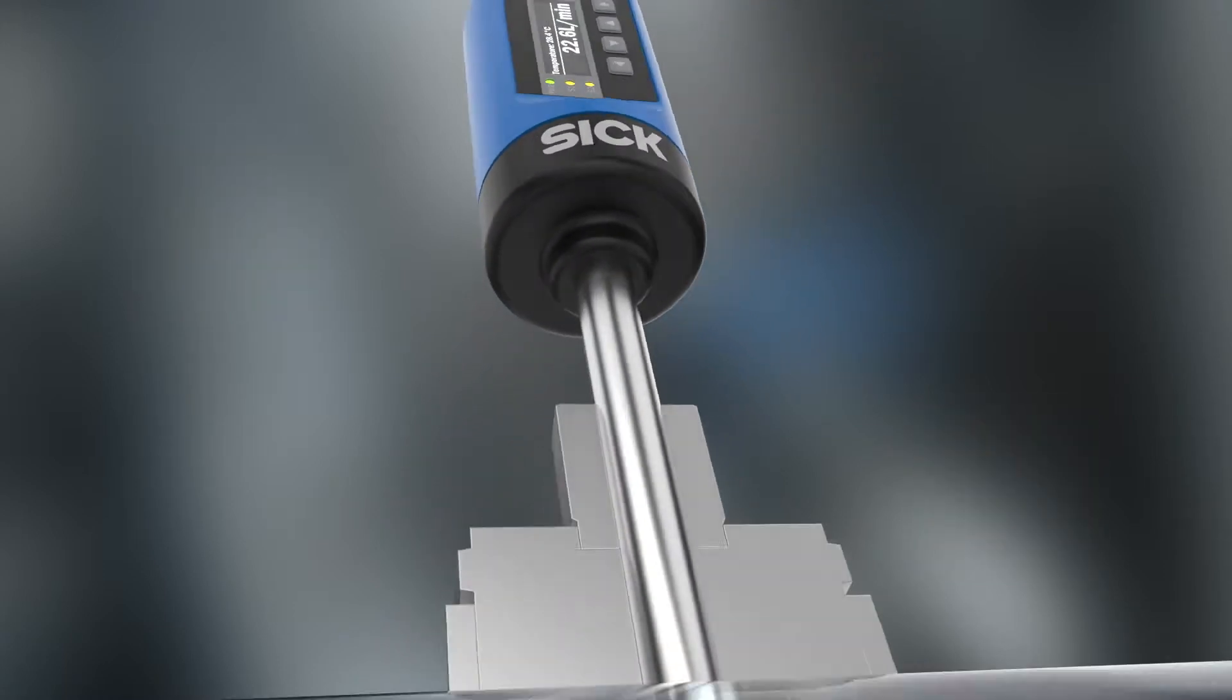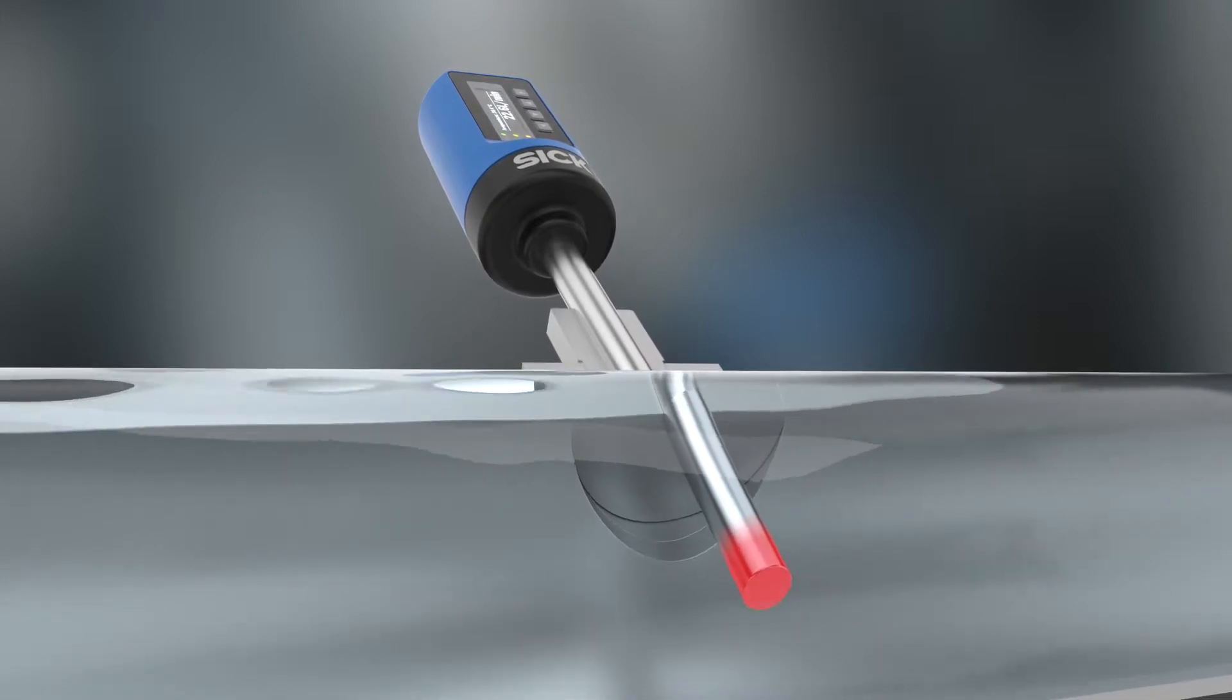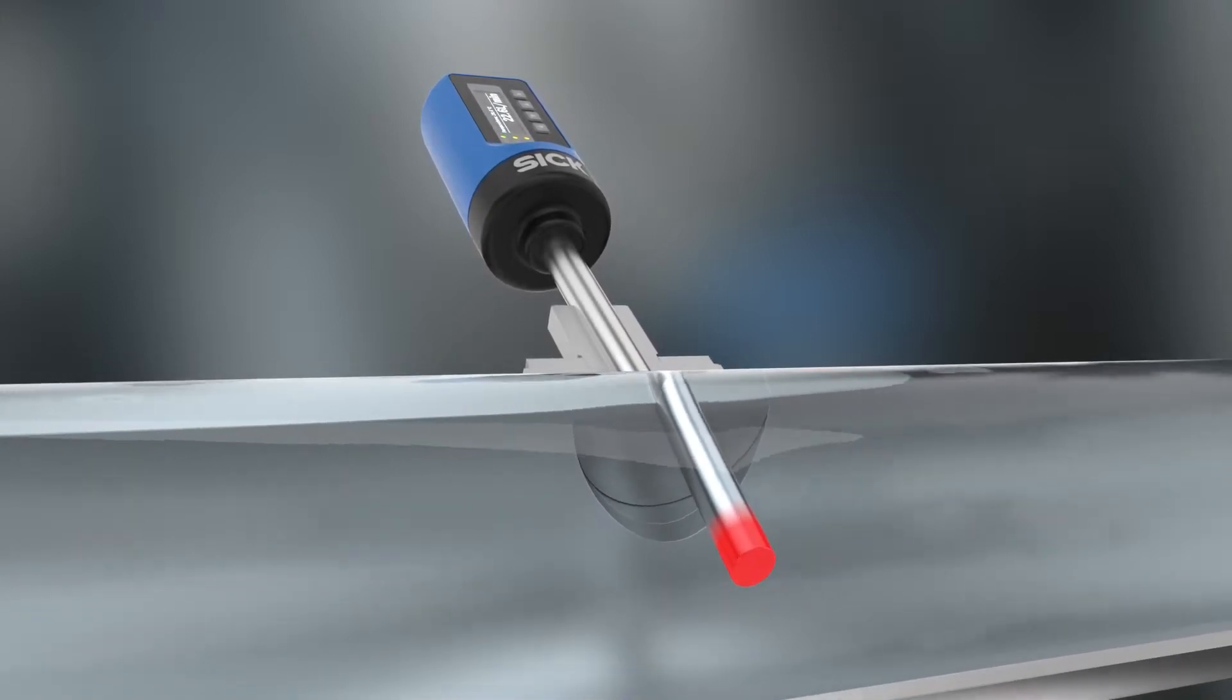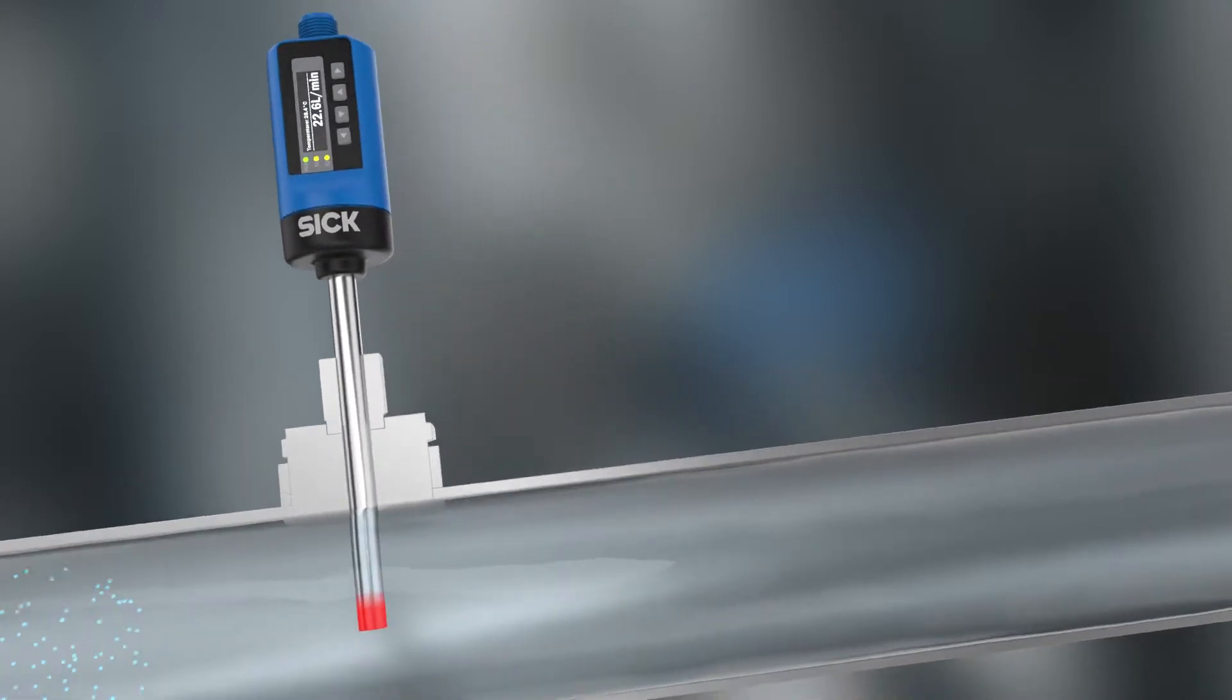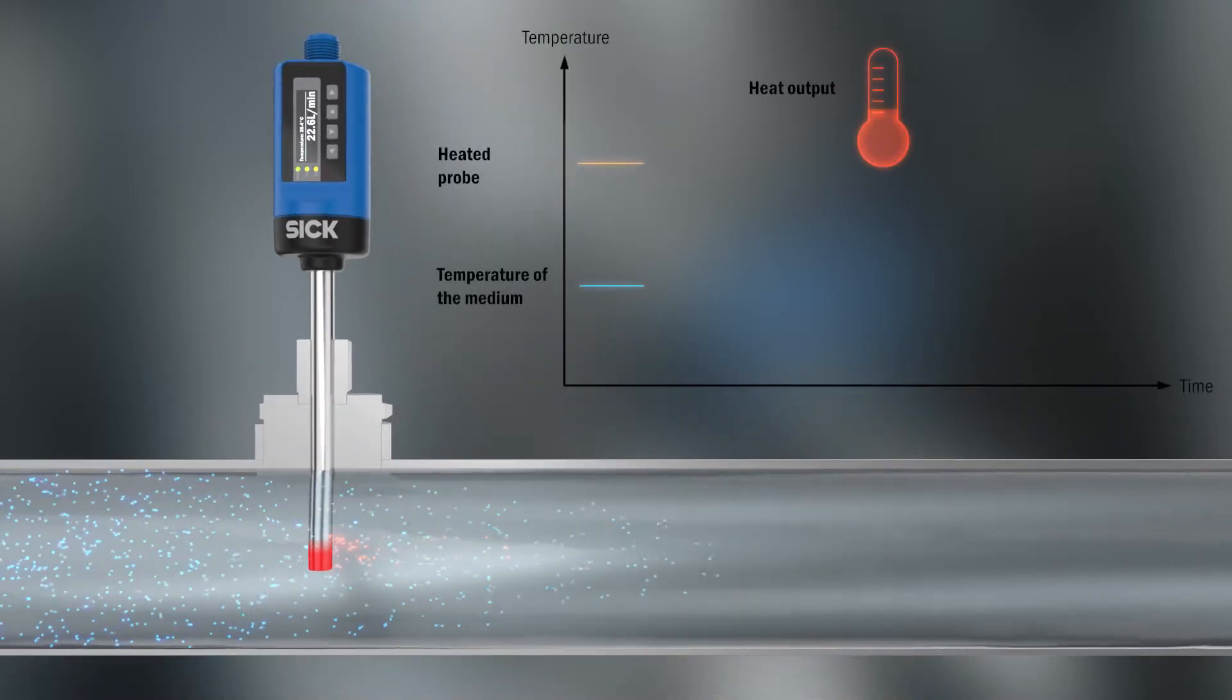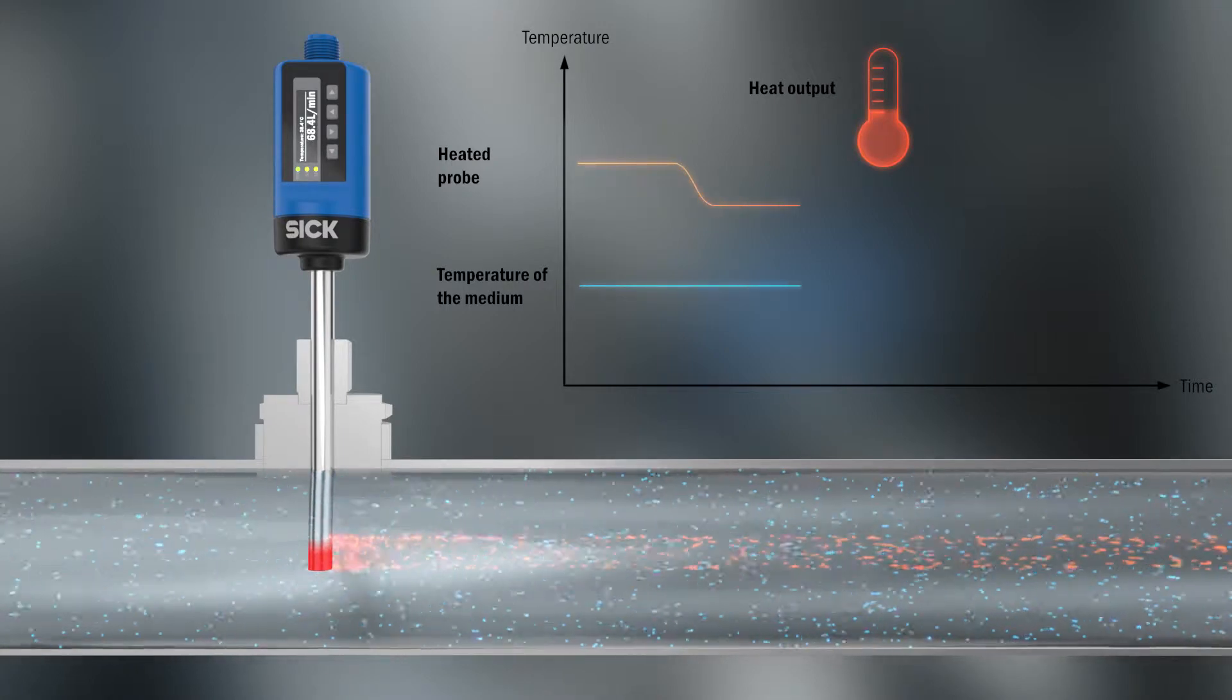The flow is detected according to the calorimetric principle. The TE-SICK probe is heated, and at the same time, a sensor element measures the temperature of the liquid. When liquid flows past the probe, it cools faster or slower, depending on the flow speed.